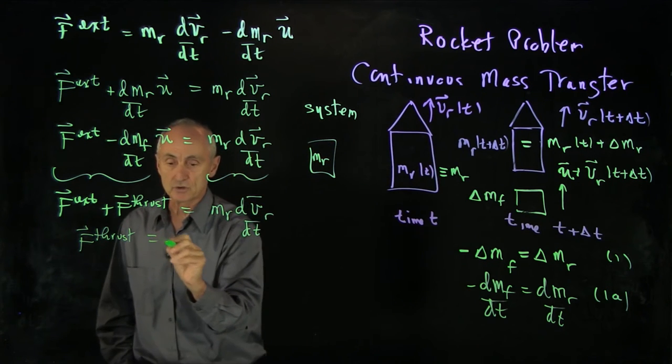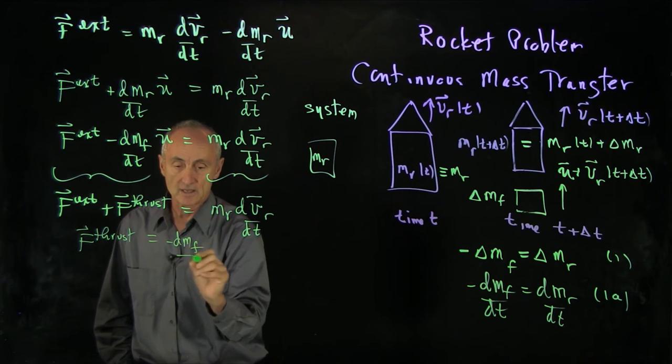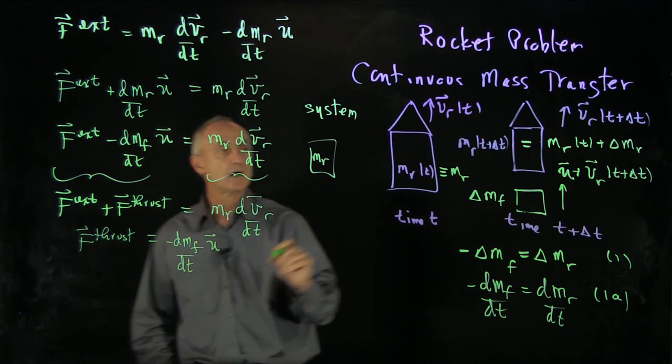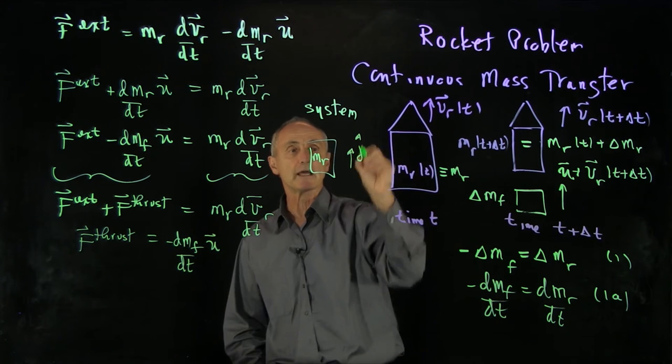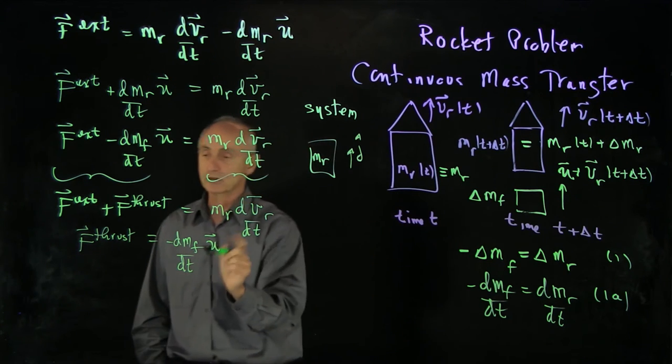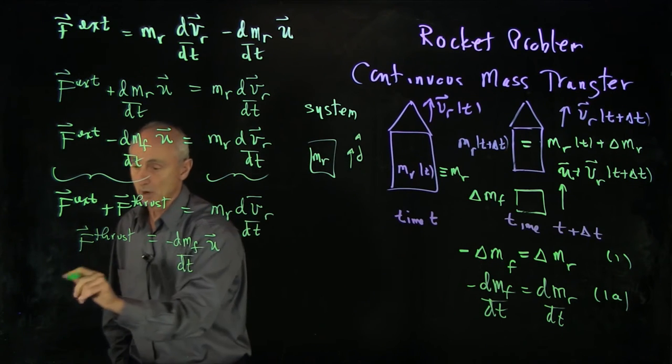And so our thrust can be thought of as an external force simply on the rocket as a system. And that's equal to minus df dt u. Now, again, if I chose j hat up, let's just look at this in components.